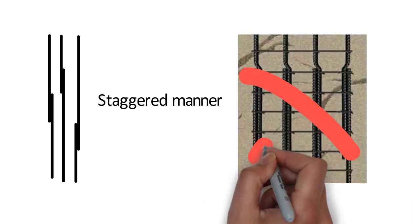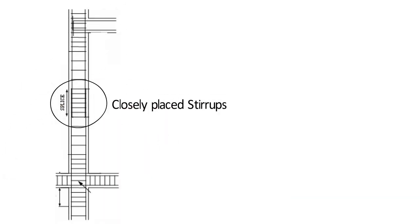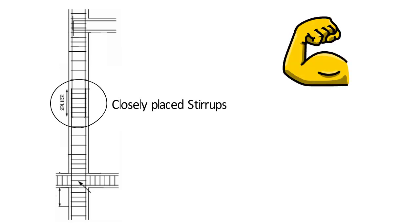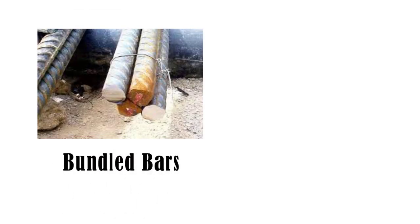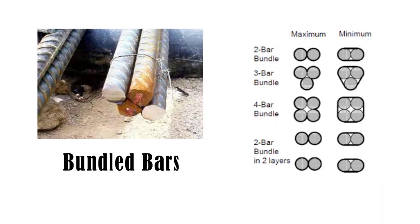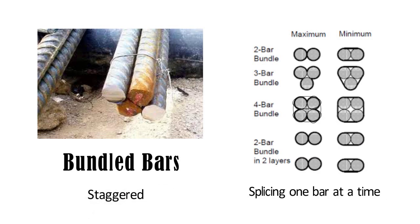Lapping should be done in a staggered manner. These laps should not be given at the same level to avoid buckling. The stirrups shall be closely spaced in the lapping portion, because when we provide lapping in a concrete member, the strength of the member slightly reduces. Hence we need to provide more number of stirrups in this portion. In case of bundled bars, lapped splices shall be made by splicing one bar at a time, and such individual splices within a bundle shall be staggered.